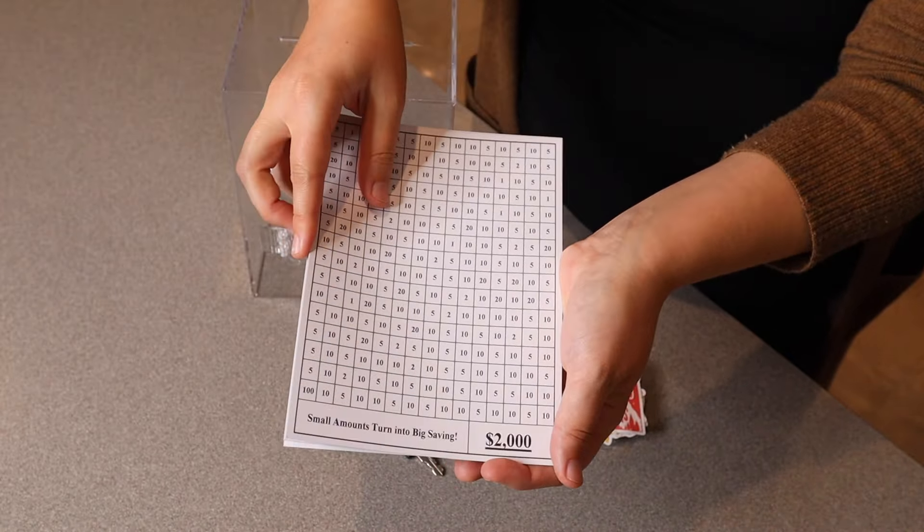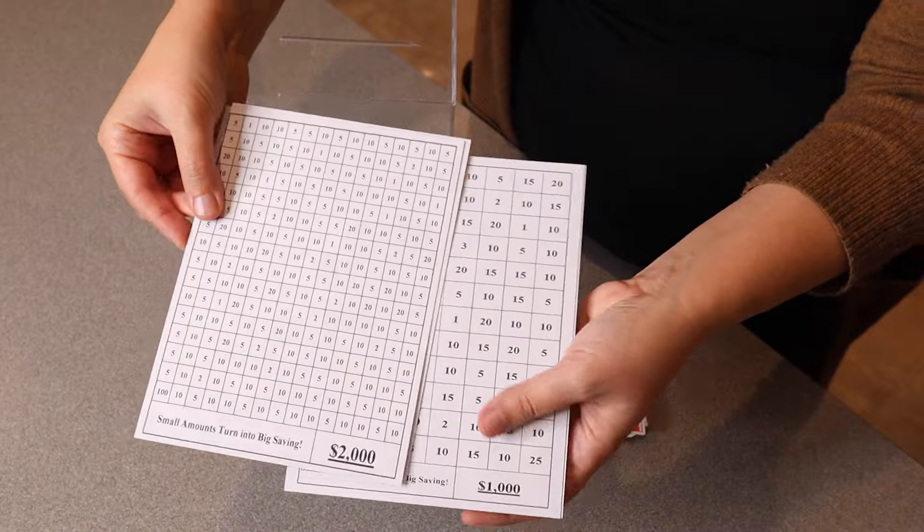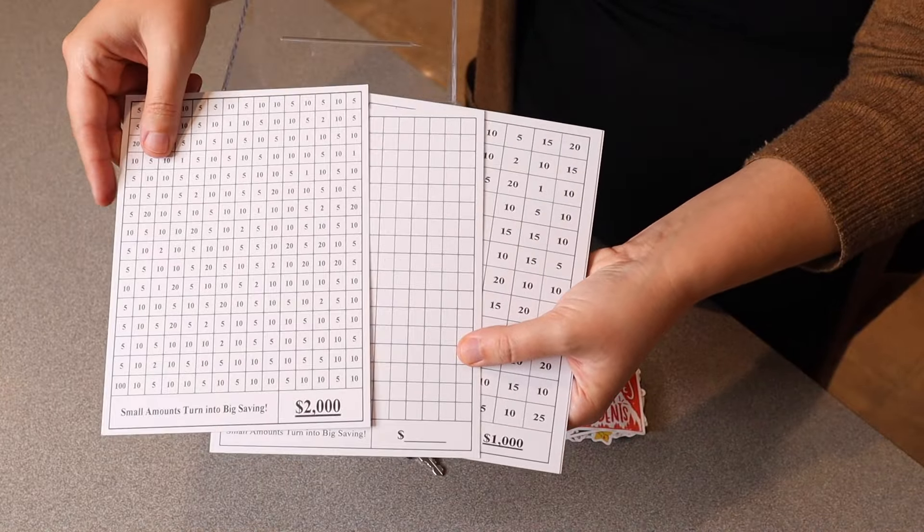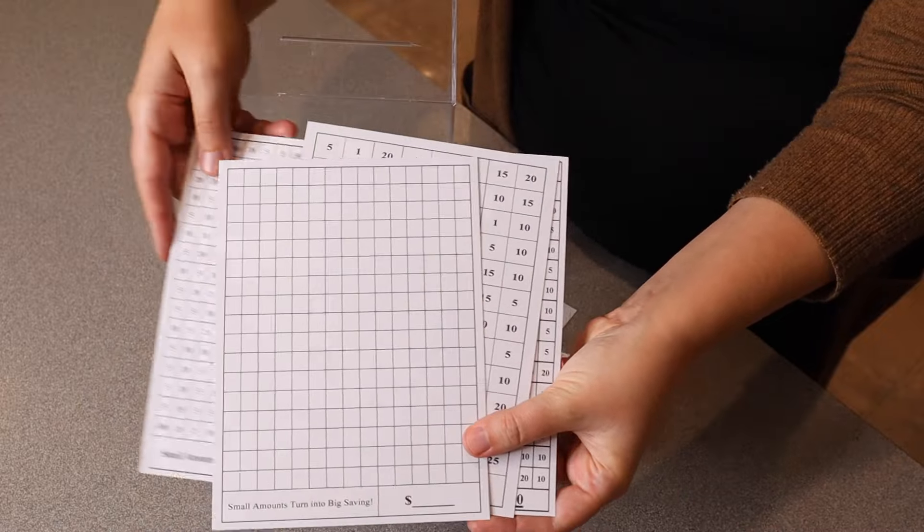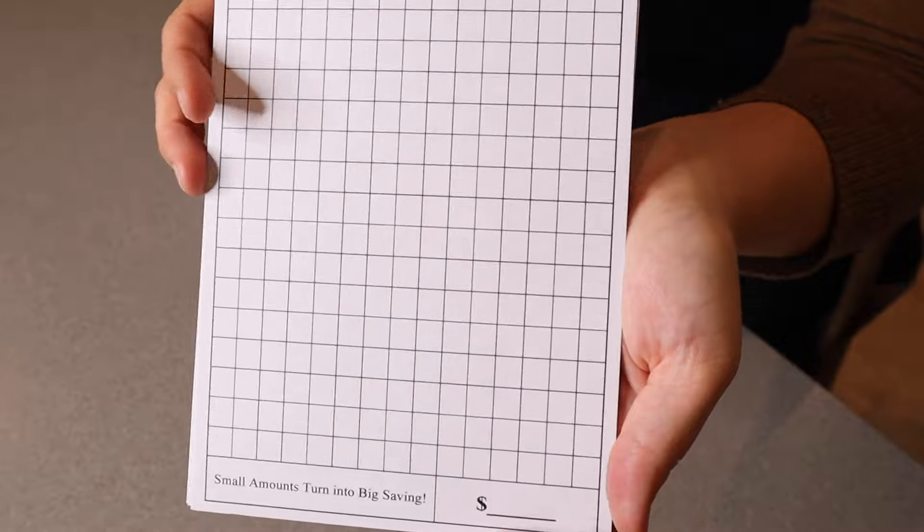We have different amounts on here as well as some custom sheets. The different savings amounts are $1,000, $2,000, $3,000, $5,000, and $10,000 and there are two different blank ones that you can fill out yourself for a custom savings plan.